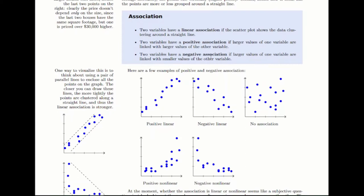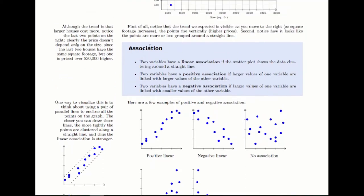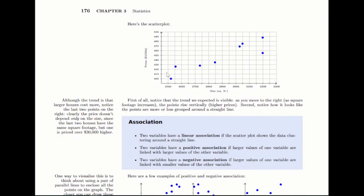We can talk about positive and negative associations. Positive is like this one with the house sizes, where as the size increases, so does the price. If larger sizes led to lower prices, it would be a negative association. It would look like the reverse of this.